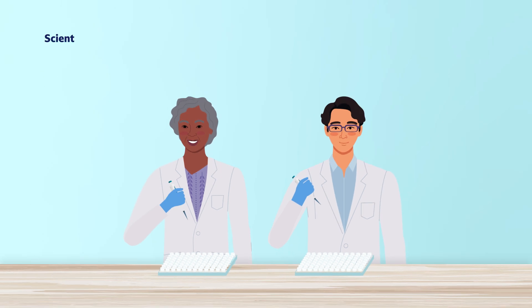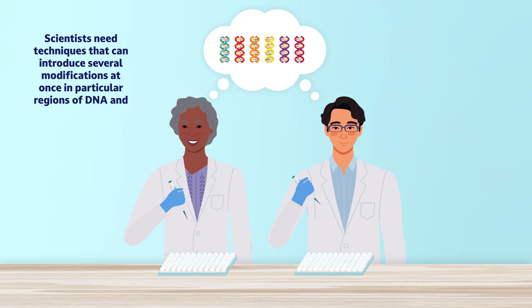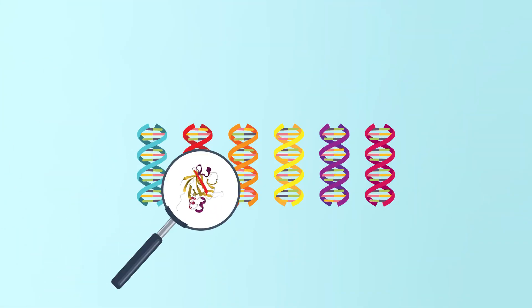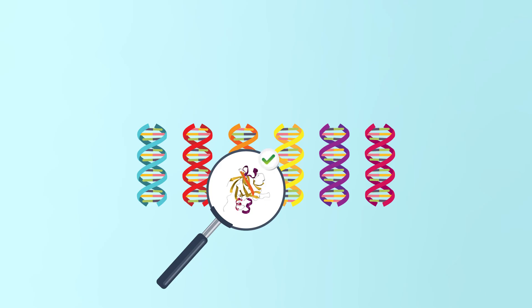To speed up this process, scientists need techniques that can introduce several modifications at once in particular regions of DNA and produce large sets or combinations of different modifications. These large sets are called libraries. A method to rapidly test the potential of these many genetic variants is also necessary.